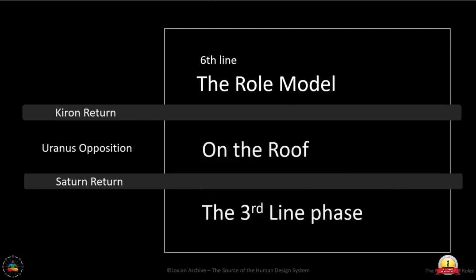The reason there is no third way expressed in any six lines — and it's important to understand that — is that there's no way to express it. How do we express it? We have our Chiron return, where they are that role model. We have our Uranus opposition, where they are on the roof. We have our Saturn return — up until Saturn they go through a third-line phase.